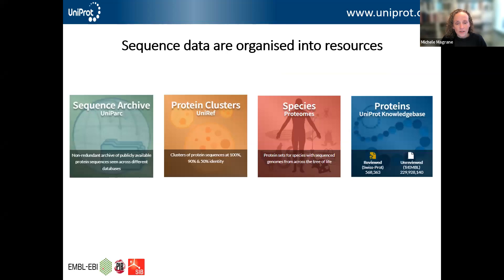The sequence data in UniProt are organized into a number of resources. The UniParc resource is a sequence archive that includes protein sequences from publicly available resources. The UniRef database clusters protein sequences at various levels of sequence identity: 100, 90, and 50%. Access to complete proteomes is provided through the UniProt proteomes portal. The centrepiece of UniProt is the UniProt Knowledge Base, which I'll be concentrating on for the rest of the talk.